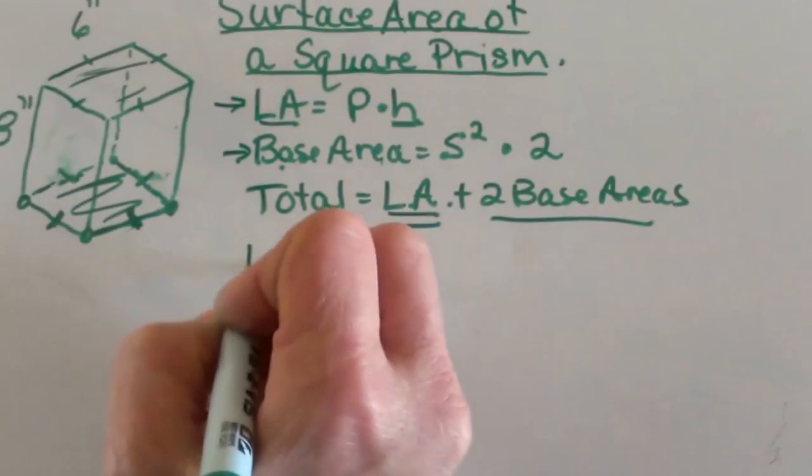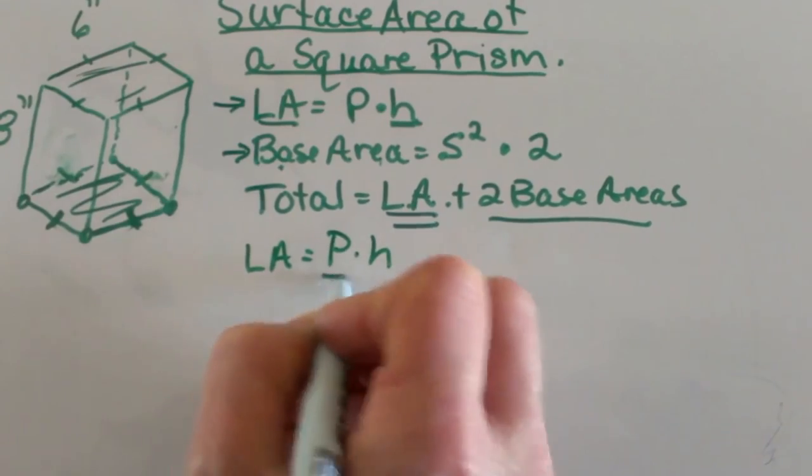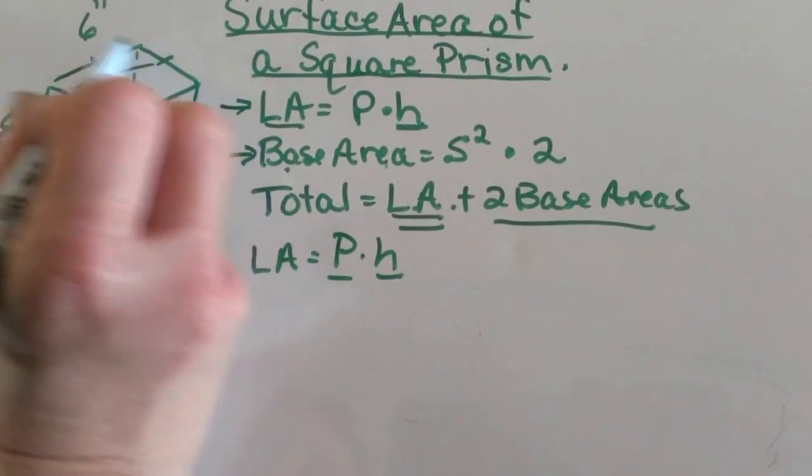Okay let's start with our lateral area. LA stands for lateral area and P times H is our perimeter times our height. So let's go look at the perimeter of our base.